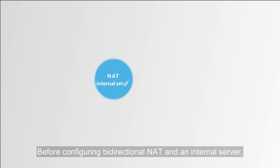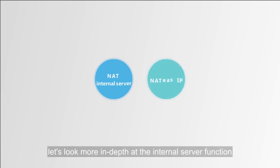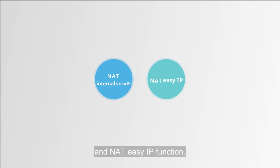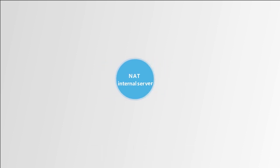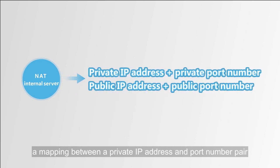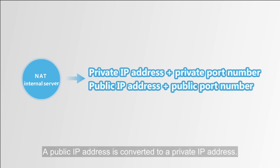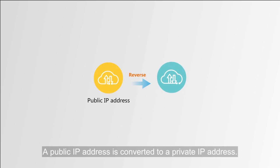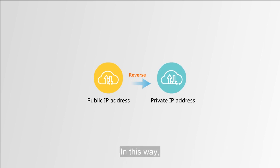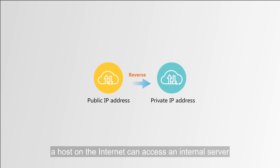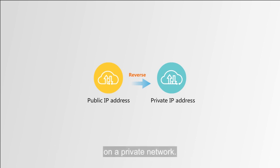Before configuring bi-directional NAT and an internal server, let's look more in depth at the internal server function and NAT EasyIP function. With the internal server function, a mapping between a private IP address and port number pair and a public IP address and port number pair is configured on a NAT device. A public IP address is converted to a private IP address, allowing a host on the internet to access an internal server on a private network.